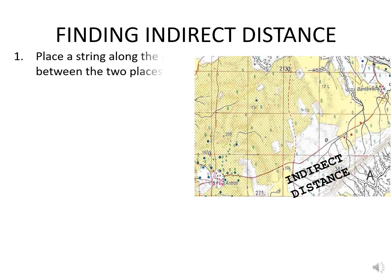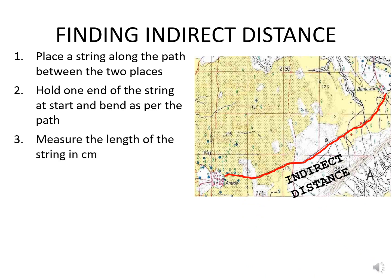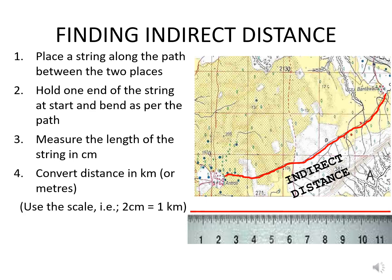Indirect distance is found by placing a string along the path between two settlements — let's say Antroli and Bantavada. Hold one end of the string at the start of the cart track from Antroli and bend the string as per the cart track shown on the map. Once you reach the outskirts of Bantavada where the cart track ends, measure the length of the string in centimetres on a ruler. Convert that measurement to kilometres or metres using the scale of 2 centimetres equals 1 kilometre. If the answer is in decimals, round off to the nearest 0.25 kilometres or 250 metres.